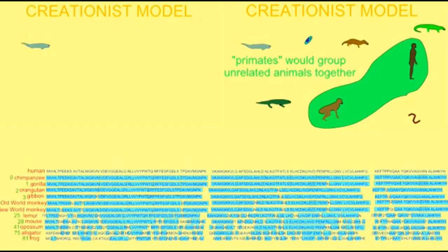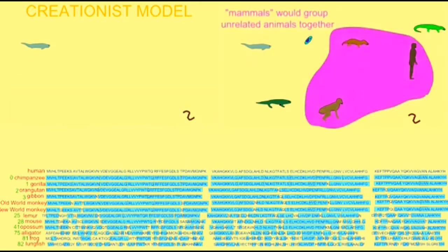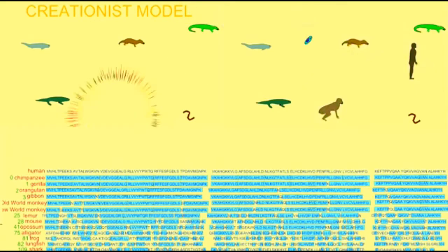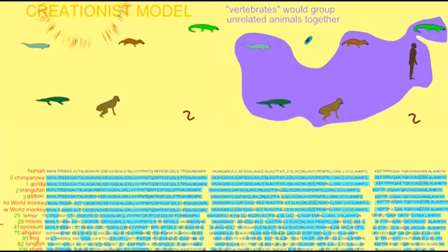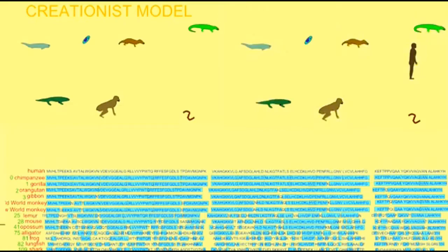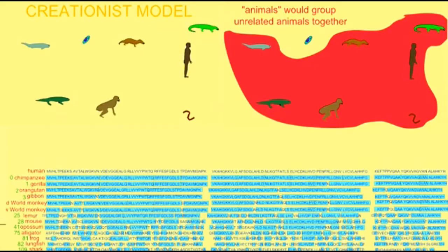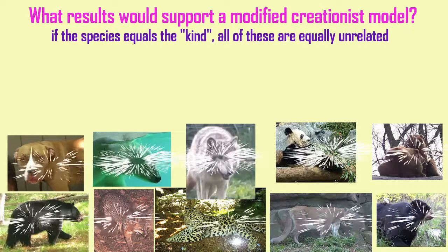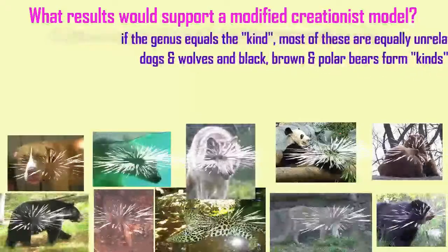So when one compares biological molecules — the DNA sequences, amino acid sequences, or proteins — one should not expect to see relationships between organisms which are 100% unrelated. One should not see a pattern of similarities like the nested hierarchy pattern that the evolutionary model predicts, if organisms are equally unrelated. If they are not in a kind, they are just as unrelated to each other as they are to rocks, or to fungi, to plants — they have zero relationship.